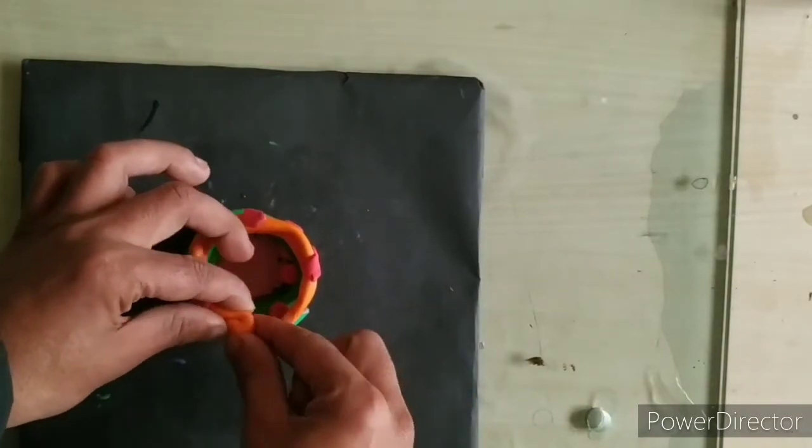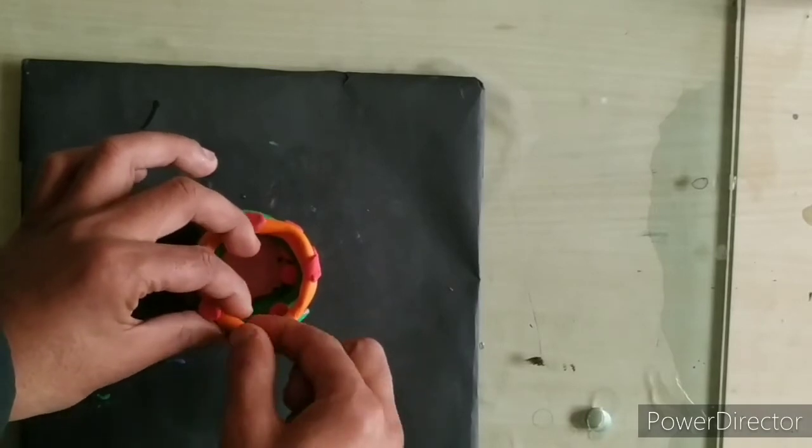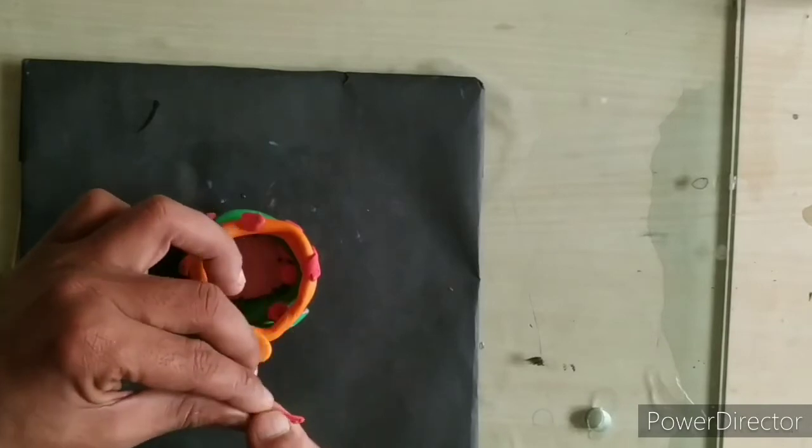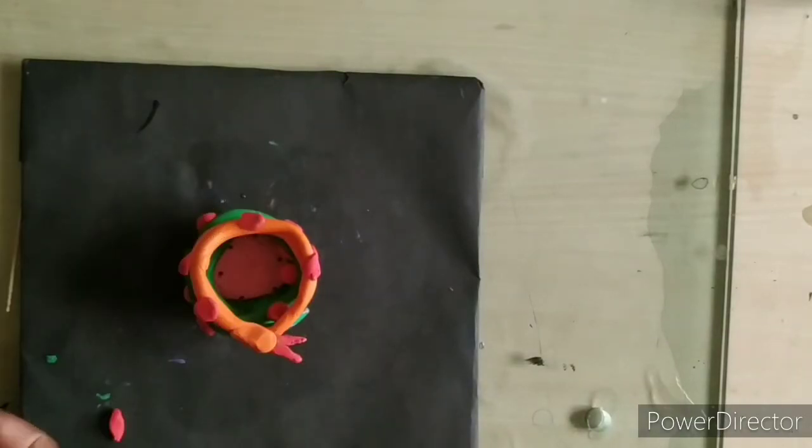Once you get to the flattened end, bend the snake head upwards and fix the red clay tongue below the edge of the flattened face.